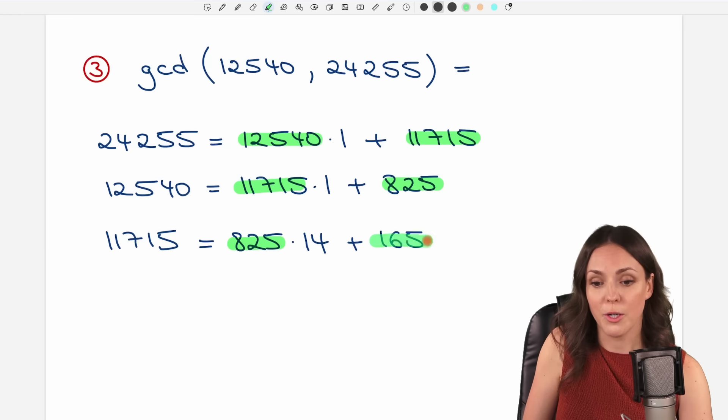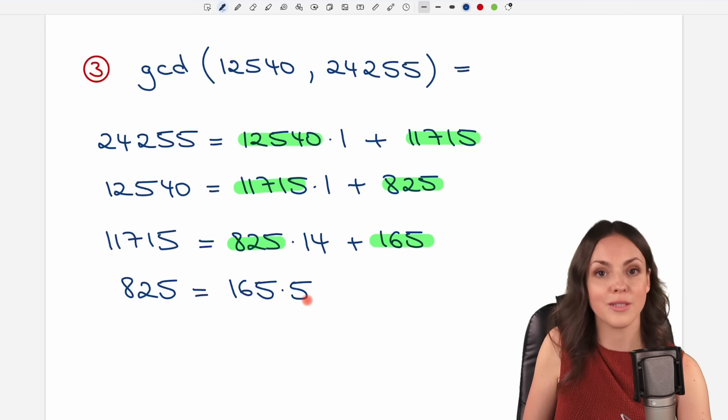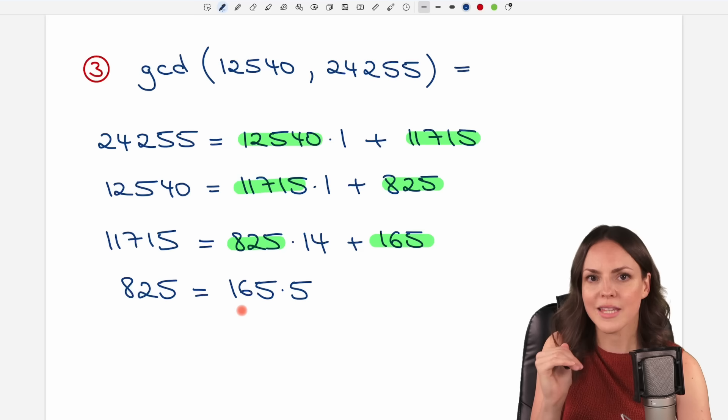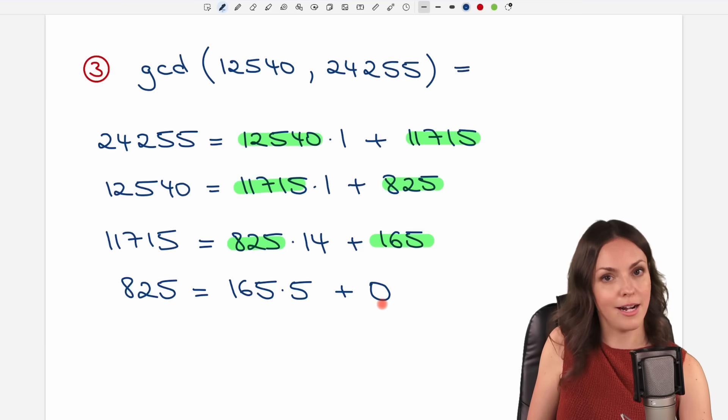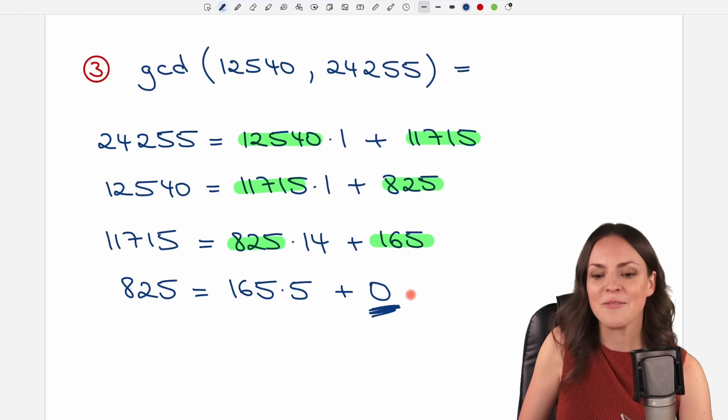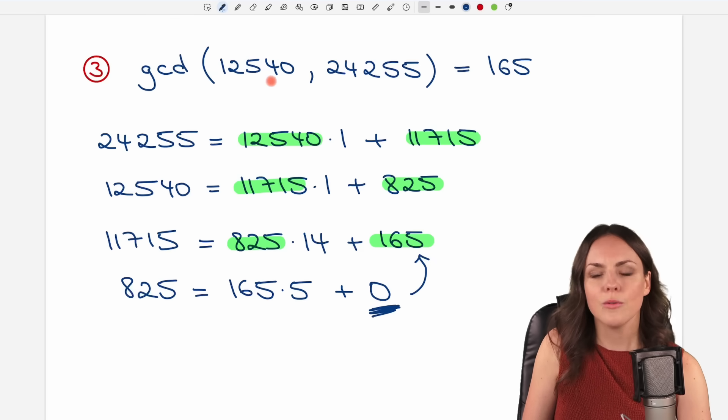New numbers. Come on, where is my remainder zero? 825. Same game. How often does the 165 go into this number? It is five times. And if you calculate this and divide this by this number, you get a result of 5. So not 5 point something, it is just 5. So we don't have any remainder at all. We found our zero remainder, which means that the previous remainder, the 165 is our greatest common divisor of these two beautiful numbers.